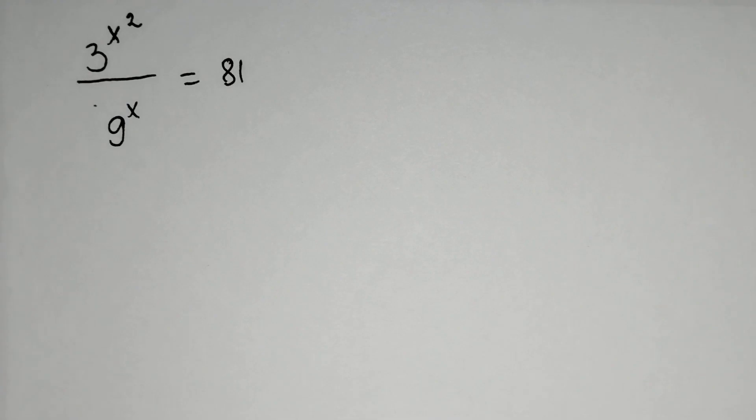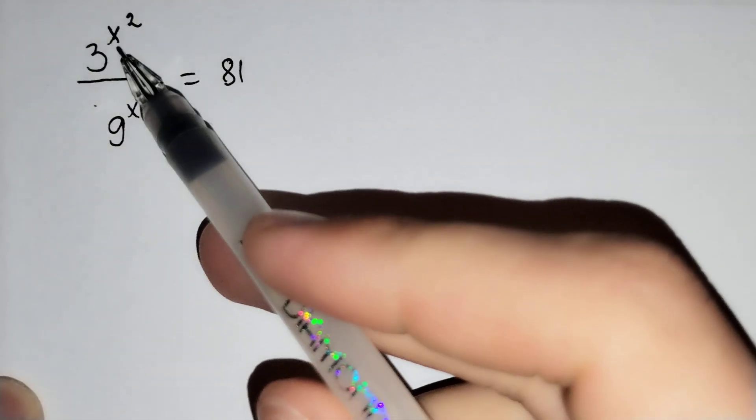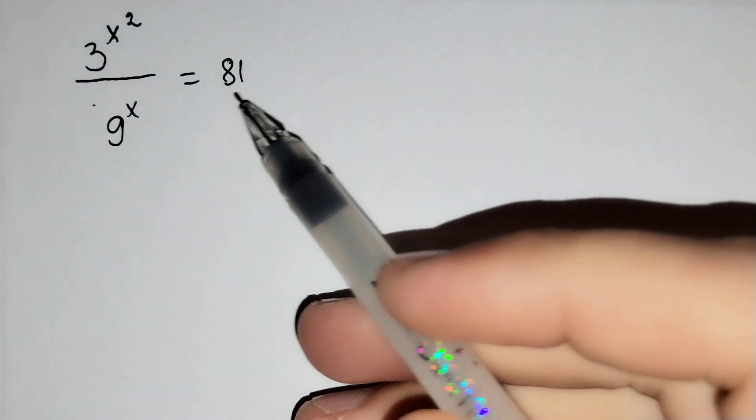Hi everyone, in this video you will learn how to solve this problem. 3 power x squared over 9 power x equals 81.